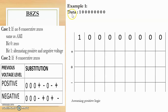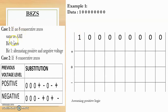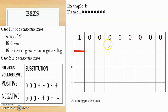Let us consider an example. Suppose we are given the data as: one, followed by eight consecutive zeros and then two more zeros. We need to convert this digital data into a digital signal using the B8ZS technique. The first bit is one, and at this point there are no eight consecutive zeros, so we use the AMI case. According to AMI, bit one alternates positive and negative; since this is the first bit, we assume positive logic and encode it as positive.